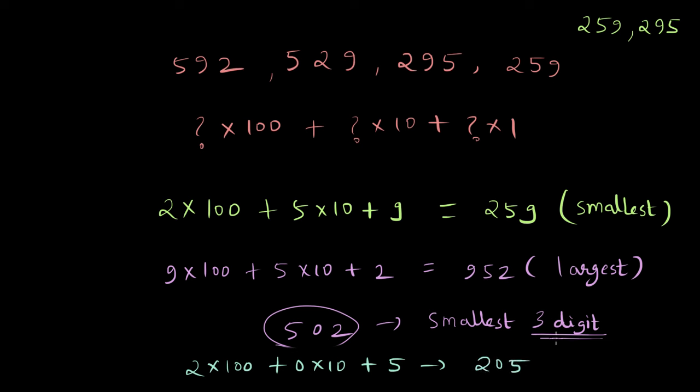That is the smallest 3-digit number that we can find, which is 205. Remember, the smallest number that still can be made using the digits 5, 0, and 2 is still 25, but the smallest 3-digit number that we can find here is 205.